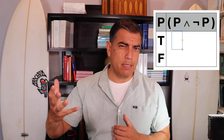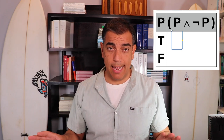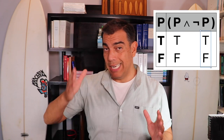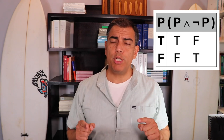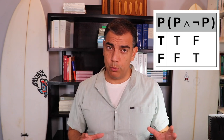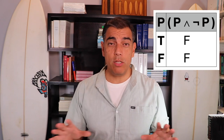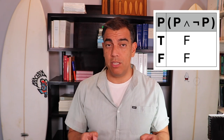Here's an example of a contradiction: P and not P. Intuitively, to say that P is true and also that P is false can't happen. We assign truth values, negate that second proposition, and the conjunction is only true when both conjuncts are true. But on either row, we have a false conjunct, so this conjunction will never be true. That proposition, based on its logical structure, is never going to come out true. This is a contradiction.